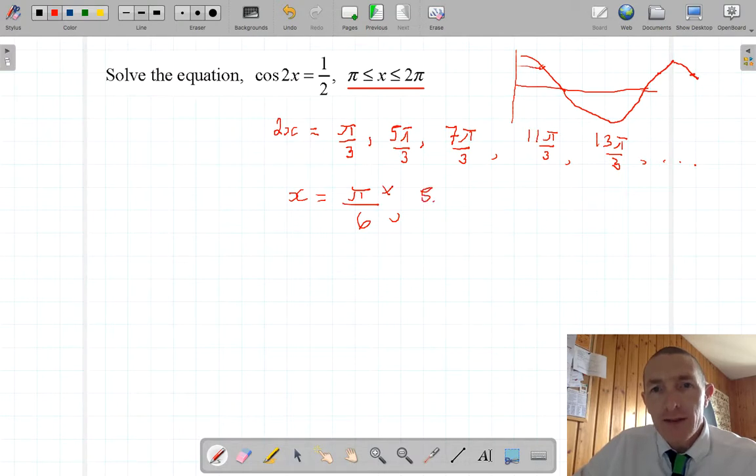This one is 5pi over 3 divided by 2, which gives me 5pi over 6. Again, that's not inside my domain, so I don't want that. This one, 7pi over 3, which becomes 7pi over 6. That one I want. That's bigger than pi and less than 2pi.